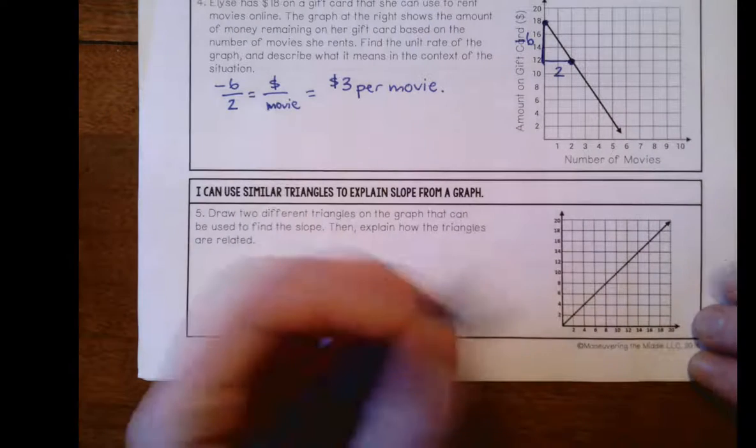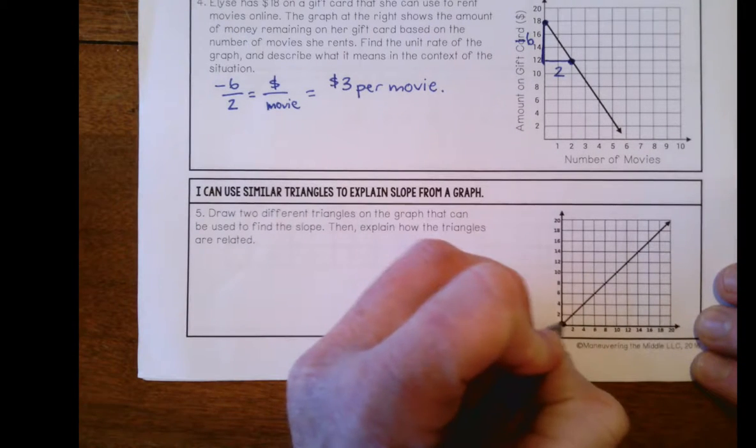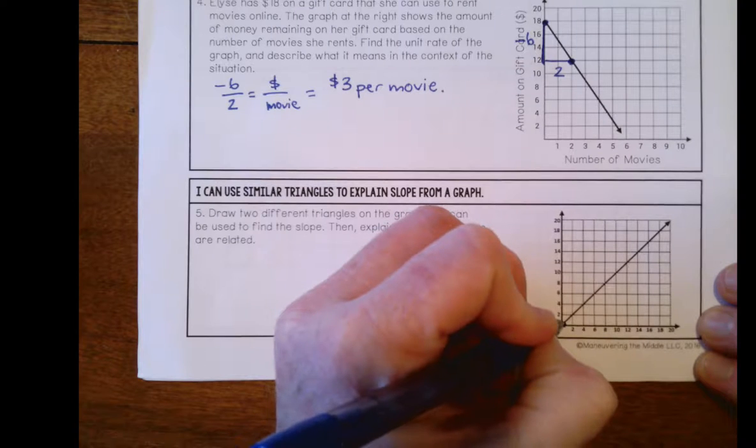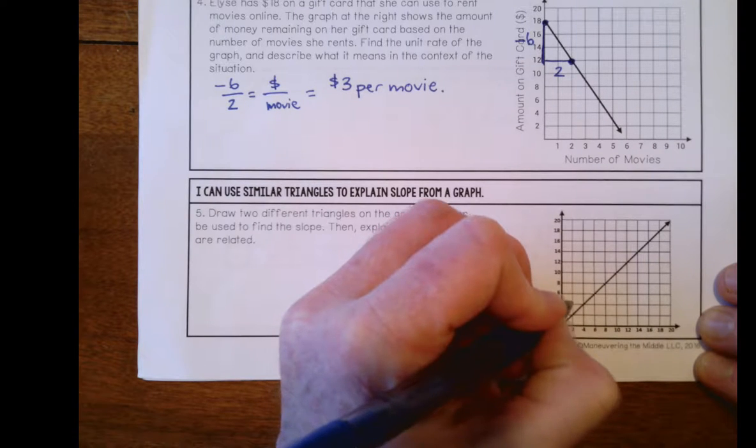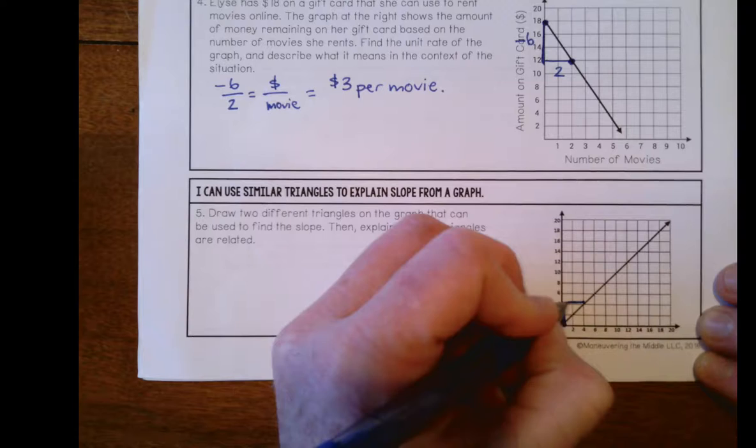Okay, so let's see here. There's one there, and I went up 4 over 4. Up 4 over 4.